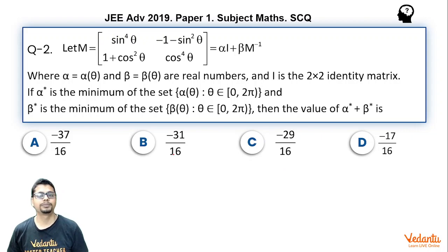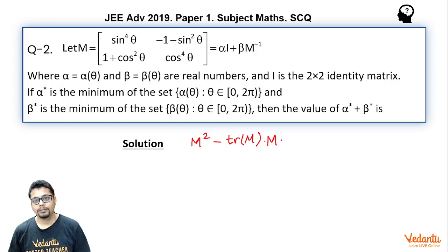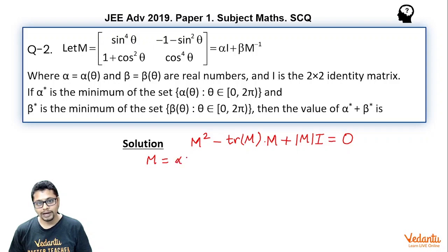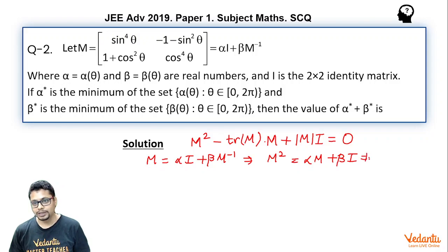Solving this is very simple if you know Cayley-Hamilton theorem. As per Cayley-Hamilton theorem, since matrix M is a 2×2 matrix, it satisfies the equation M² minus trace(M)·M plus det(M)·I equals the null matrix. We have been given M equals alpha·I plus beta·M inverse. Multiplying both sides by M — whether you pre-multiply or post-multiply, it does not matter — you get M² equals alpha·M plus beta·I, which becomes M² minus alpha·M minus beta·I equals null matrix.